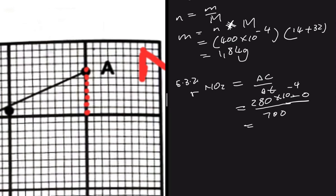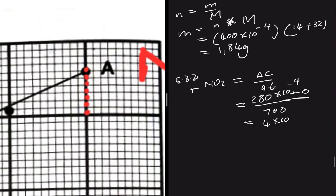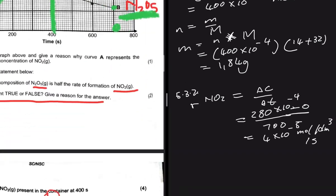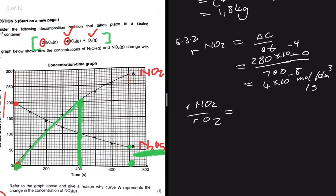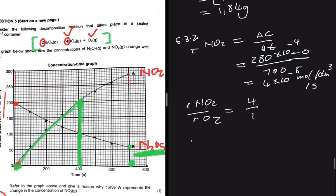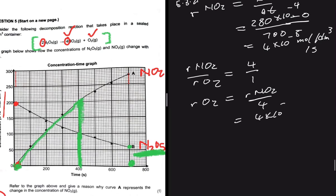So rate of NO₂ = (280 × 10⁻⁴ − 0) / 700 = 4 × 10⁻⁵ mol·dm⁻³·s⁻¹. Now using balancing coefficients: rate(NO₂) / rate(O₂) = 4 / 1, so rate(O₂) = rate(NO₂) / 4 = 4 × 10⁻⁵ / 4 = 1 × 10⁻⁵ mol·dm⁻³·s⁻¹. That is the average rate of production of O₂.